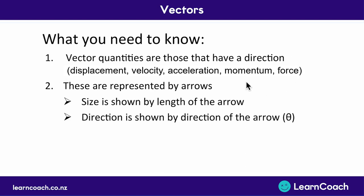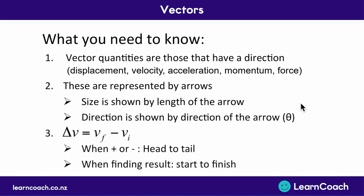The size of any of these quantities is shown by the length of the arrow — the bigger the size, the bigger the length. Direction is shown by the direction of the arrow, that's the angle the arrow is on. The most common formula to remember — not on your formula sheet — is that the change in velocity equals the final velocity minus the initial velocity. Minusing an arrow means you point it in the opposite direction and add head to tail. It's only when finding the resultant that you draw from the very start of the first arrow to the very end of the last arrow.